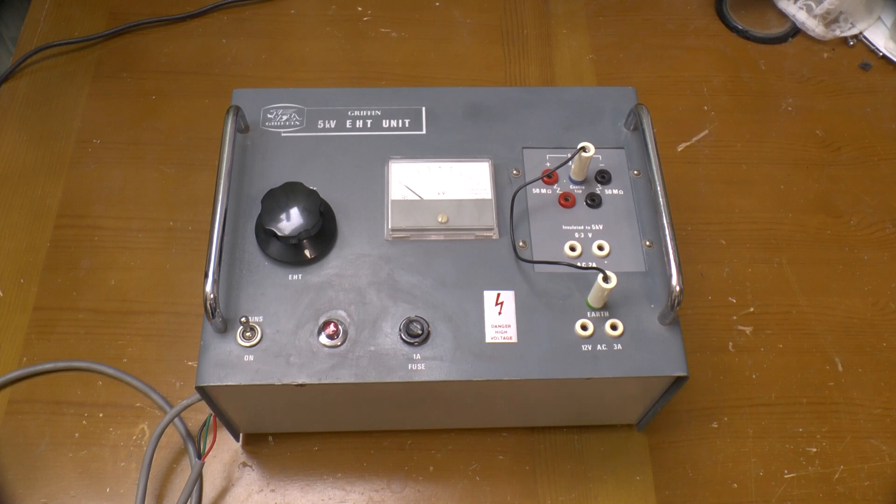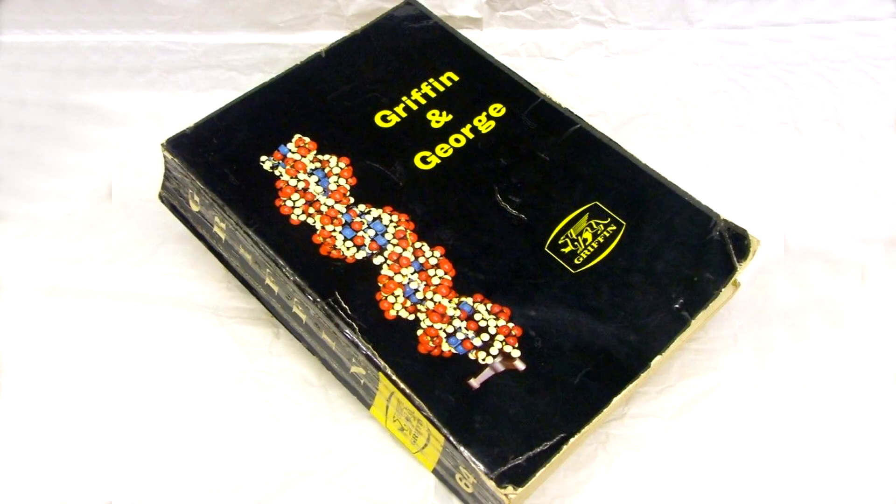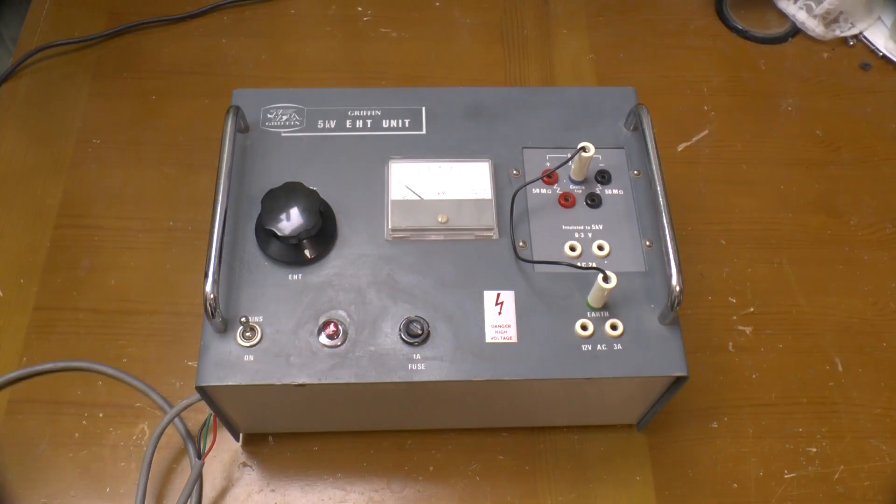Greetings. This is a Griffin 5000 volt laboratory power supply scavenged from a skip. For those watching overseas, Griffin and George was a supplier of science teaching and laboratory equipment. Those who were in school in the 80s and 90s may remember a lot of this stuff in their laboratories.